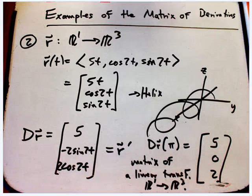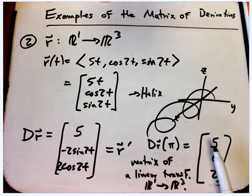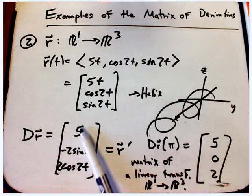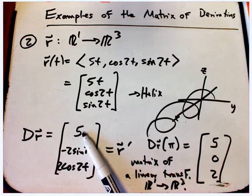But that's an explicit example of the matrix of derivatives in this case. Note this guy, this is never 0. Of course, this one, the 5, never vanishes at all.